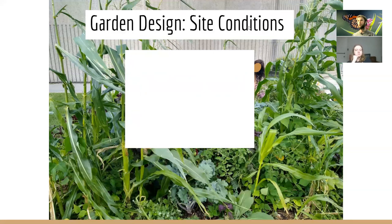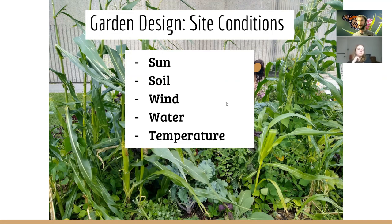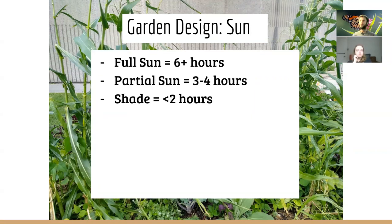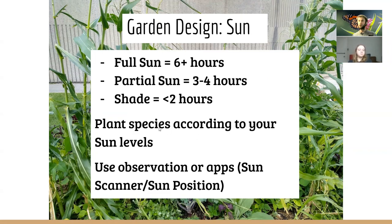For garden design we look at existing site conditions: where the sun comes from, what the soil is like, where the wind comes from, how much water we have, and what the temperature or climate is like. For sun, things are broken down into three categories: full sun, partial sun, and shade. You can figure out what your garden has quite easily and plant species according to the sun levels using observation or apps.